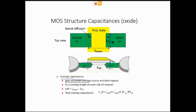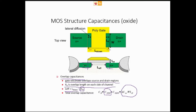The gate electrode overlaps the source and drain regions. XT is the overlap length on each side of the channel, so the effective channel length is the overall channel length minus LD where LD is the channel length reduction due to overlapping. This gives a gate-source overlap capacitance and a gate-drain overlap capacitance. Until now we only knew about oxide capacitance, but now we know that due to overlapping there is additional capacitance in the device.